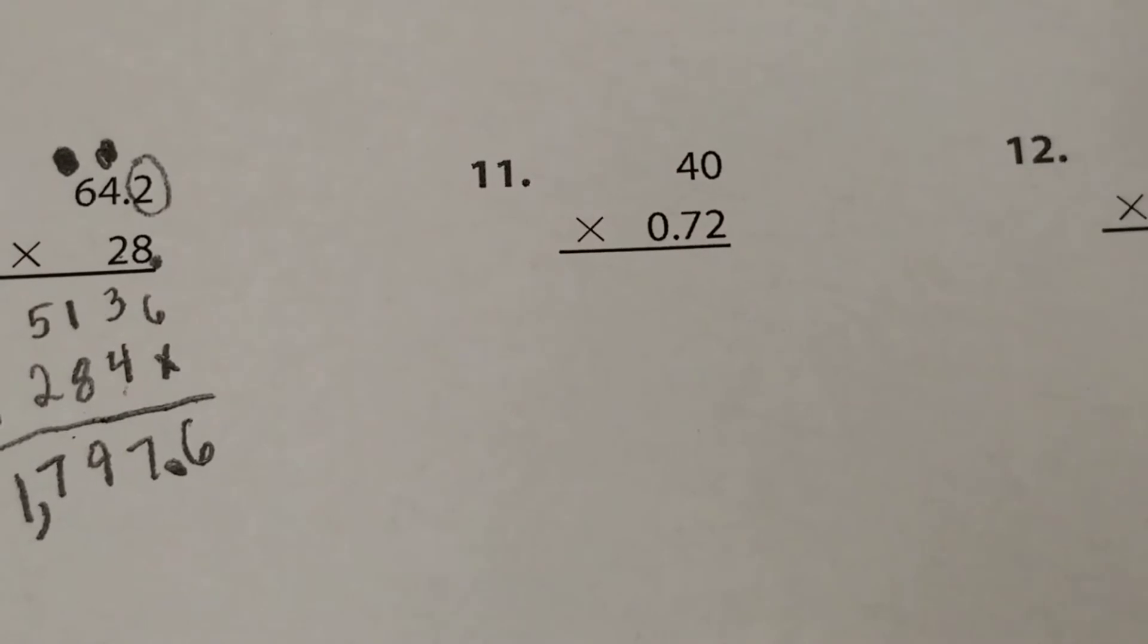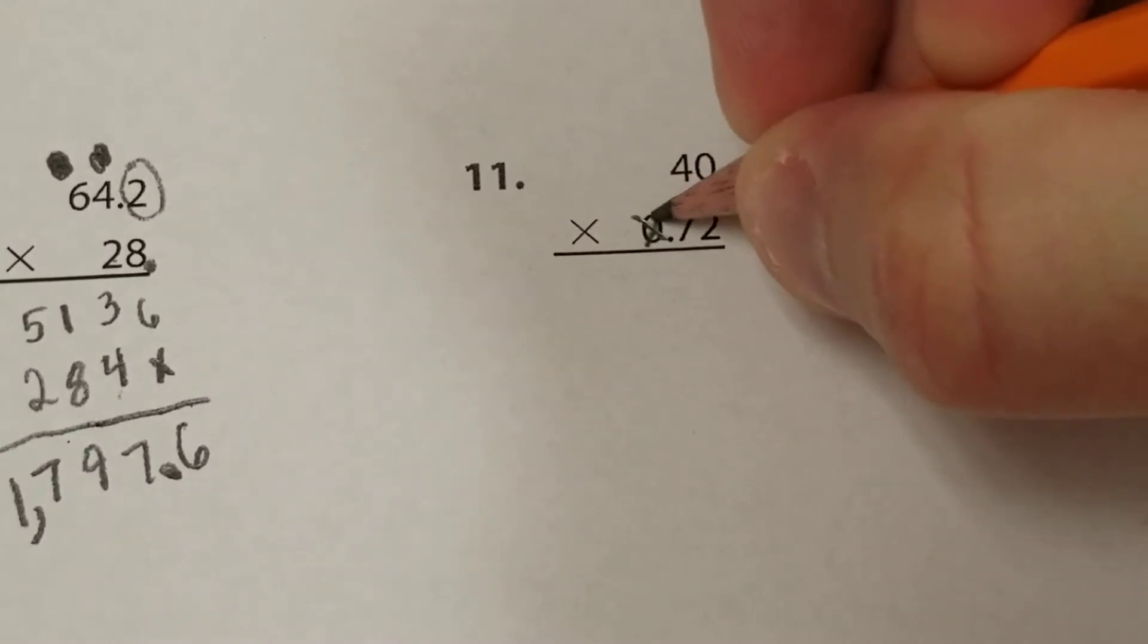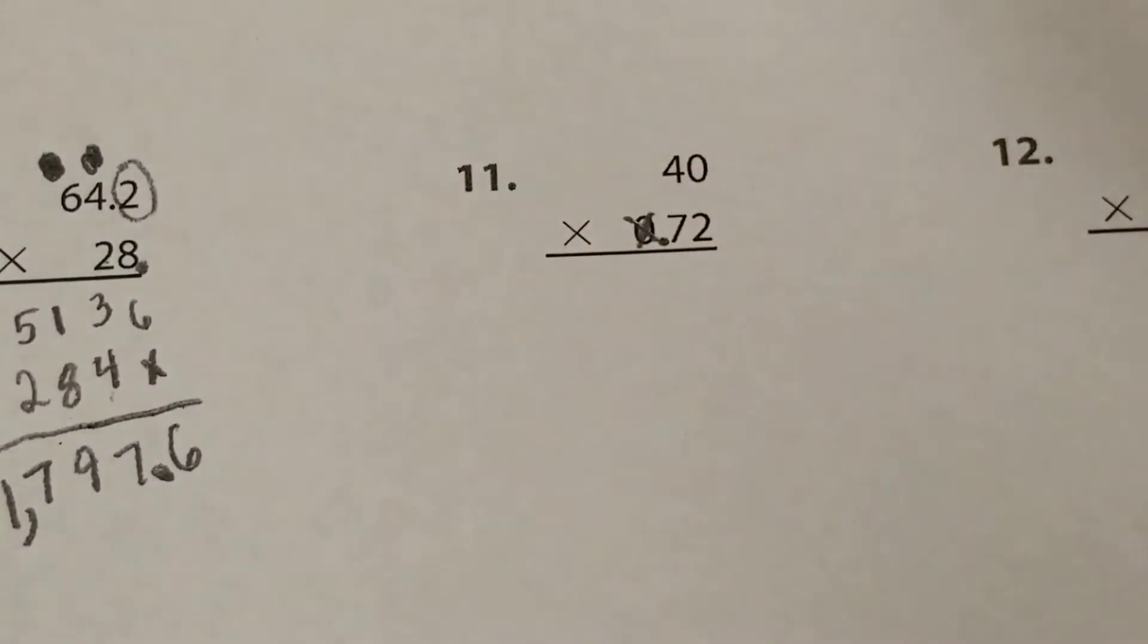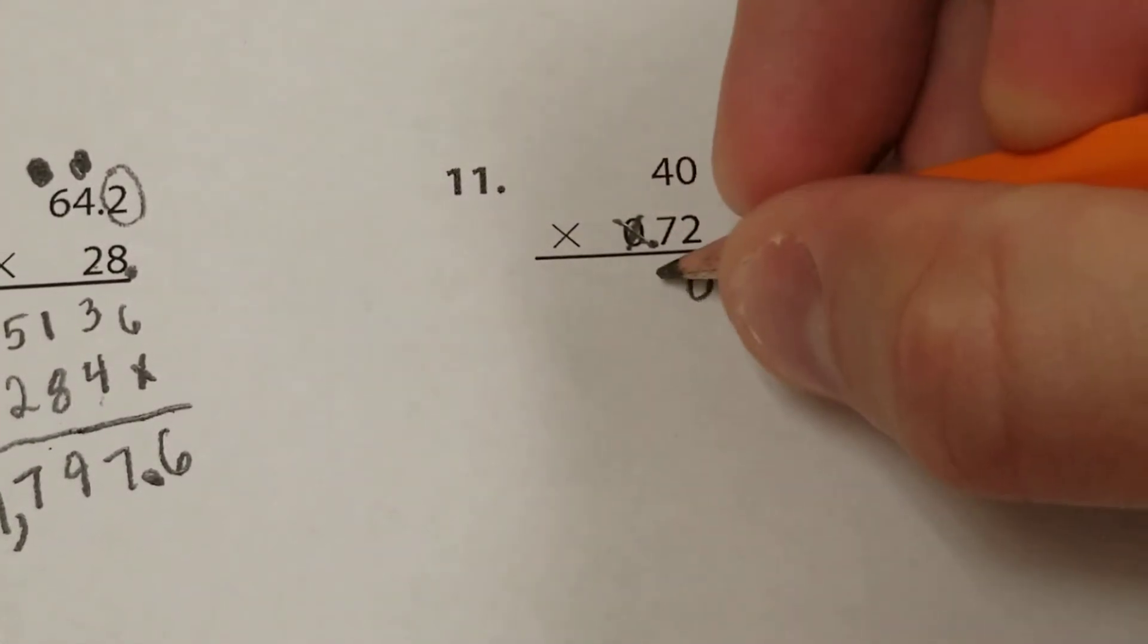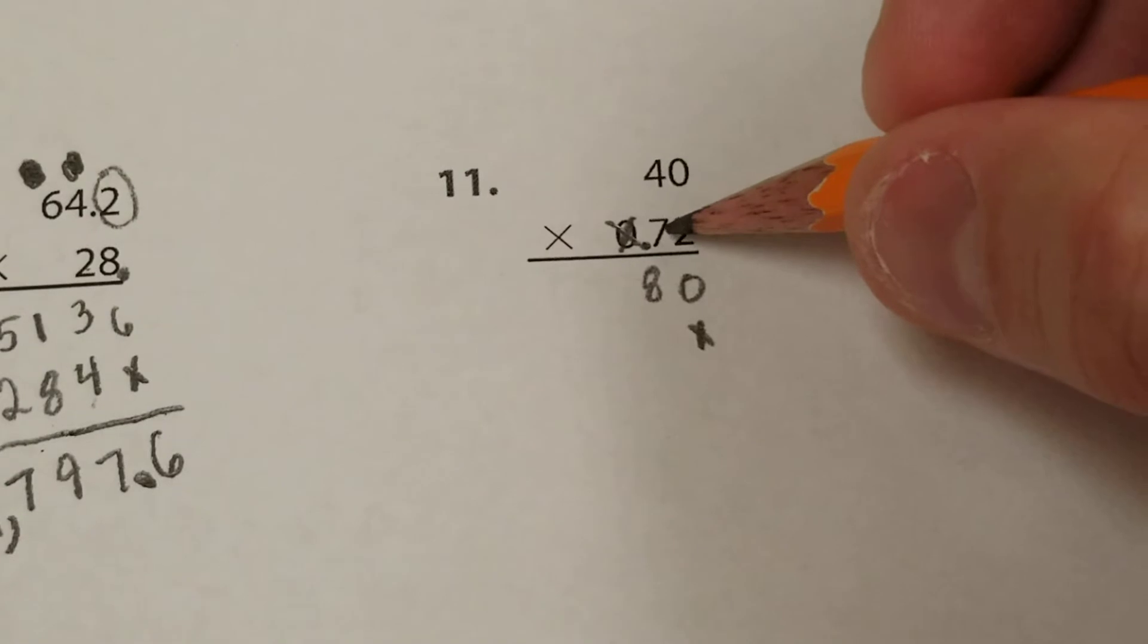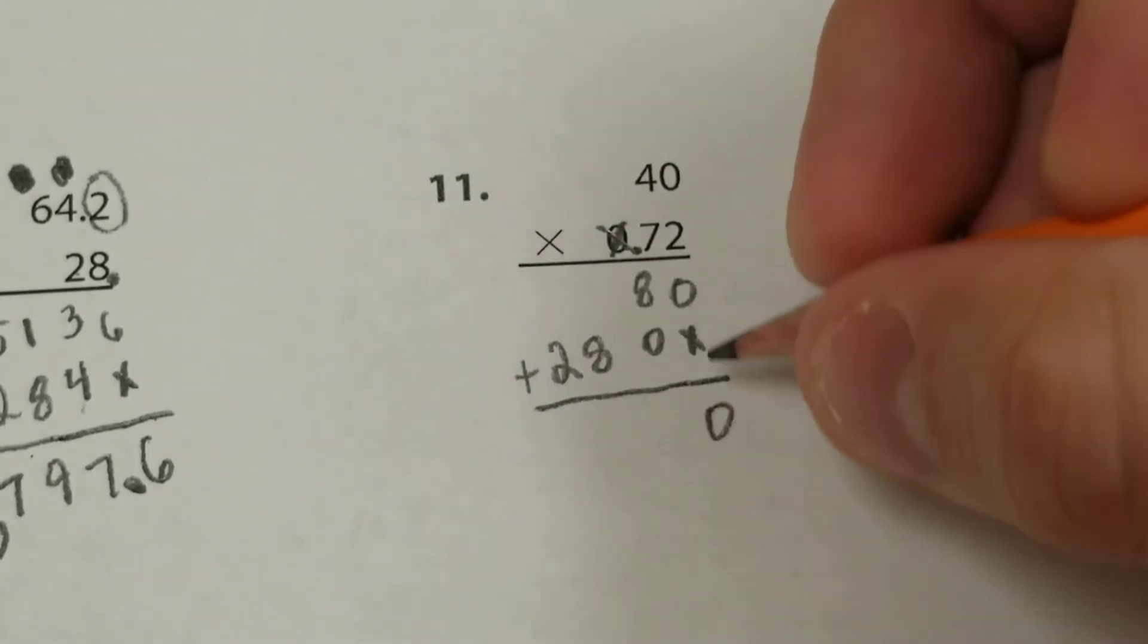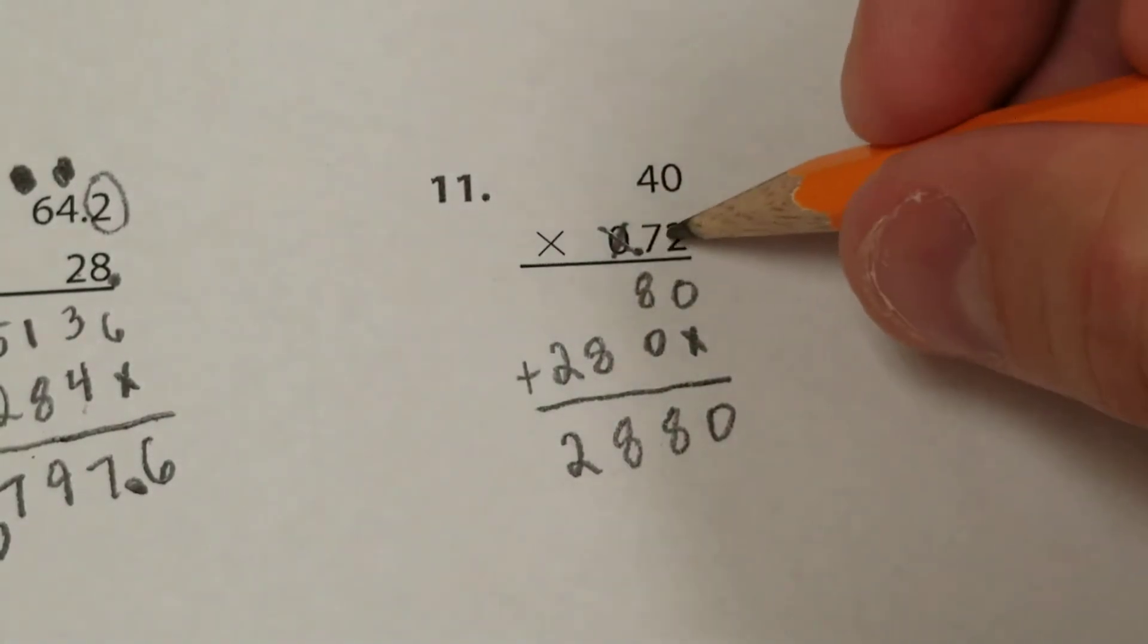For this one, we have 40 times 0.72. I go ahead and if the whole number is 0, I'm just going to get rid of it. I don't need to multiply by a 0 when it's a whole number. So I'm just going to leave it as 40 times 0.72. Multiply as normal: 2 times 0, 2 times 4. Put in your placeholder because you're shifting over a spot. 7 times 0, 7 times 4. Add: 0, 8, 8, 2.